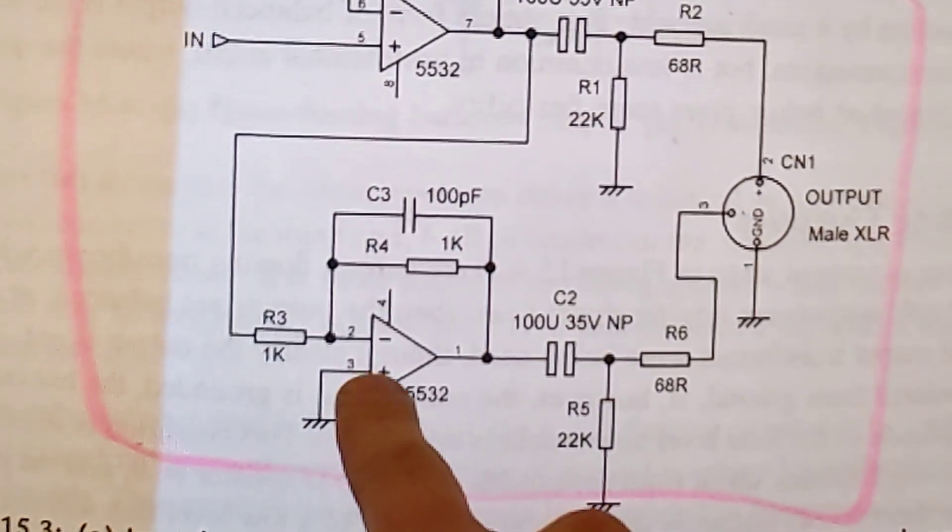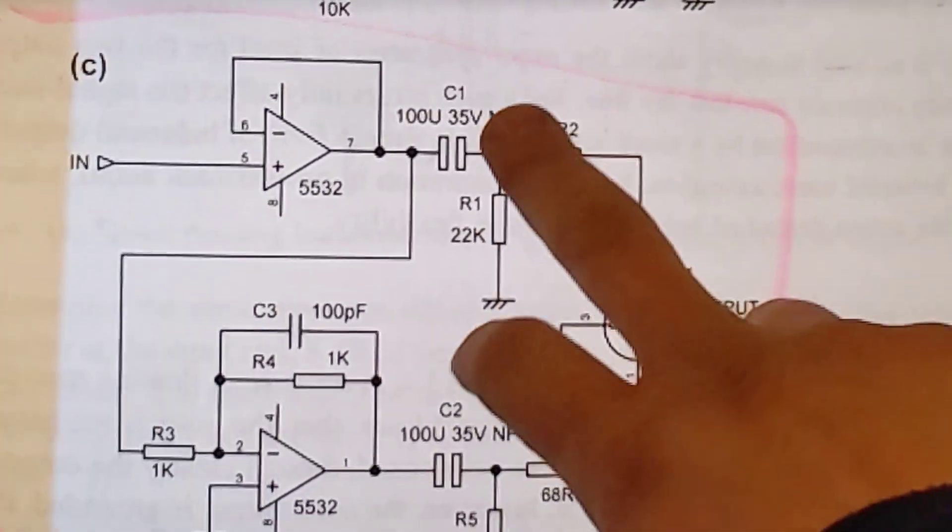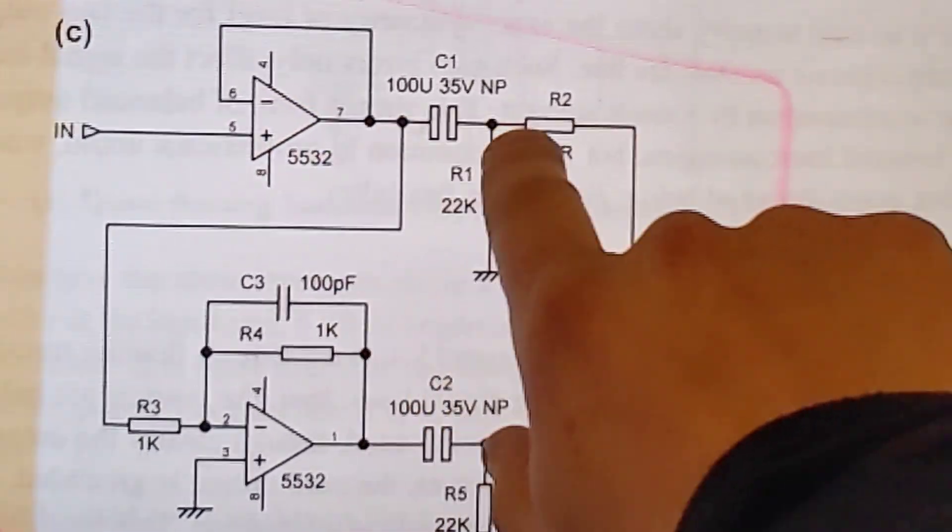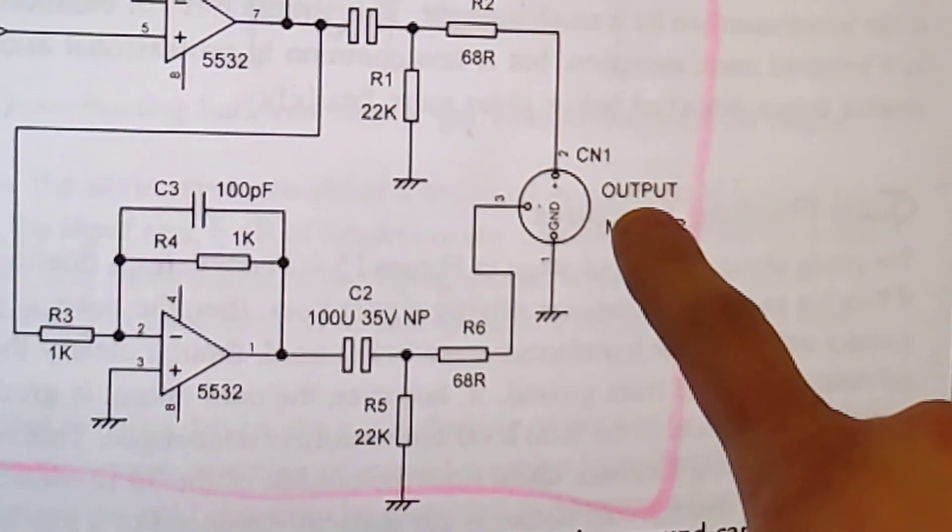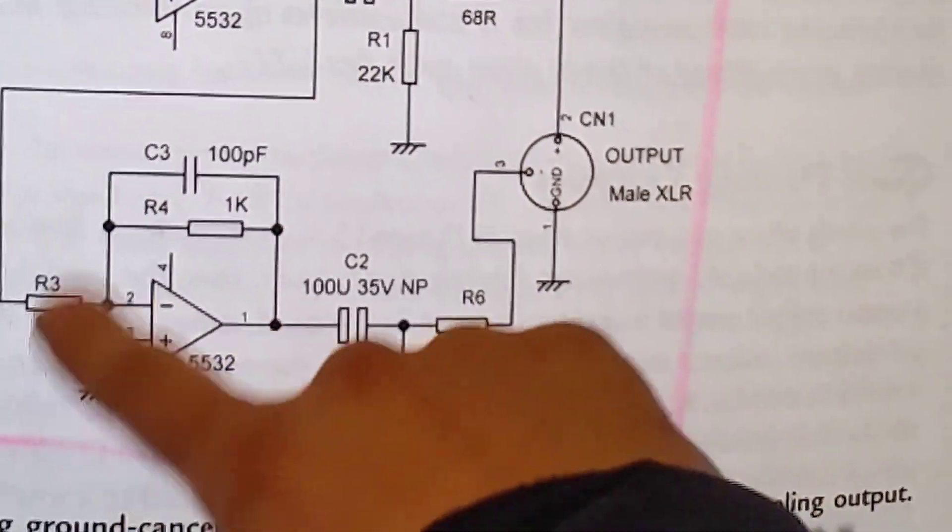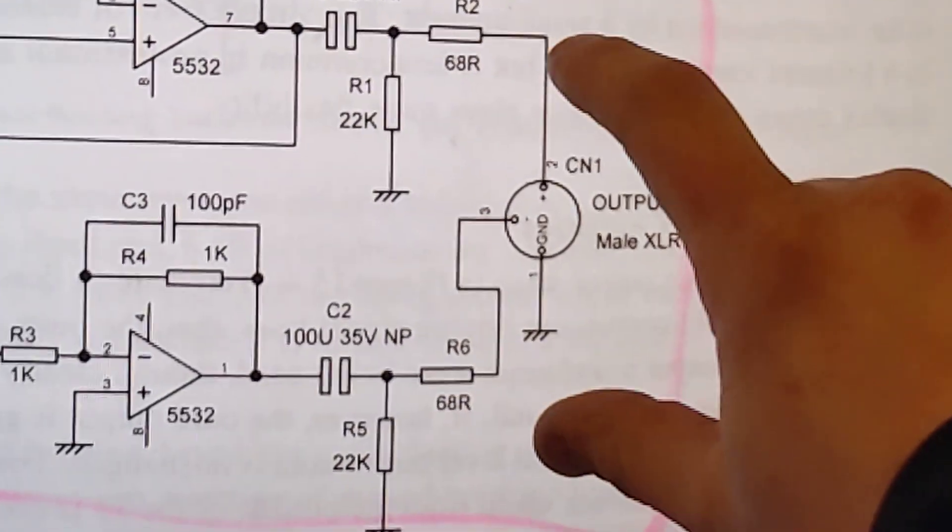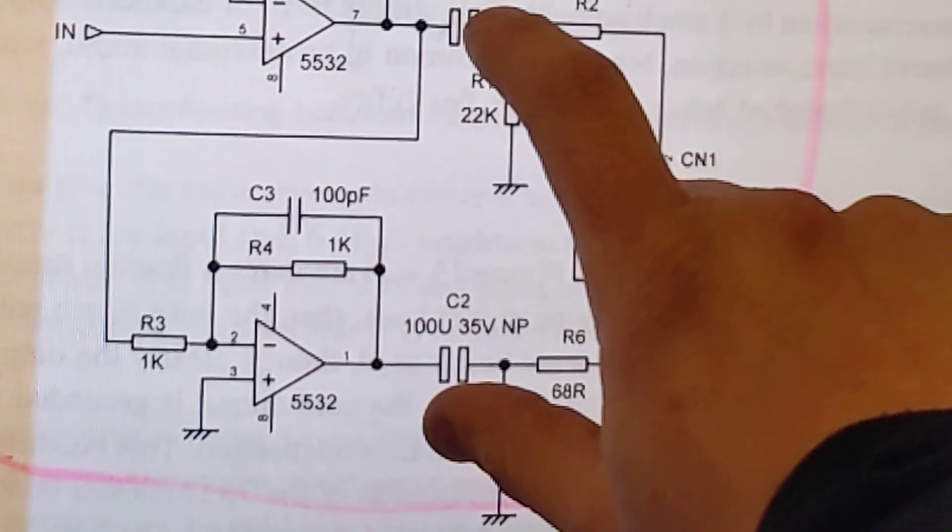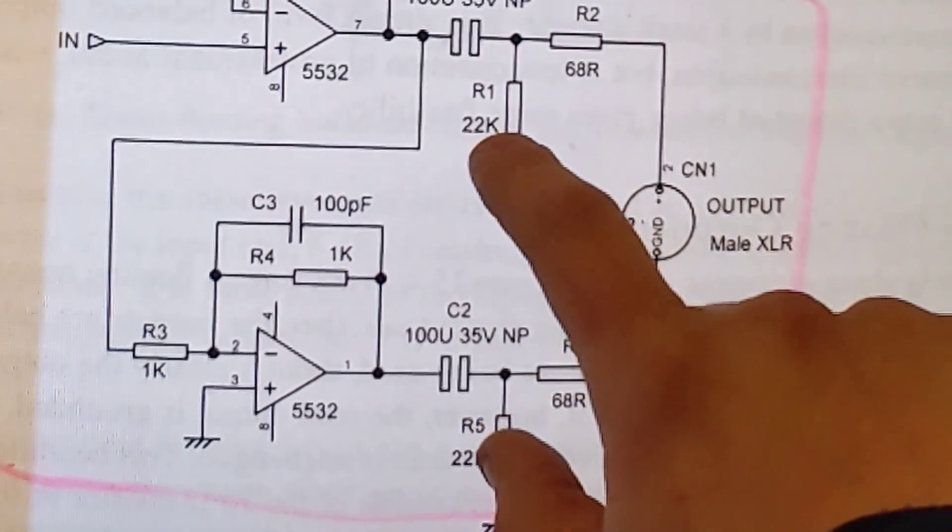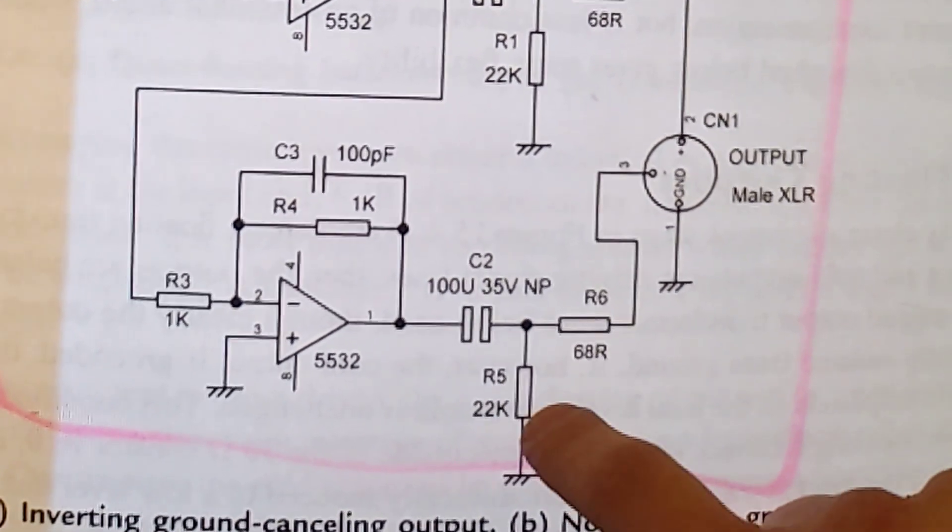Then you have a cap, non-polarized cap. This is DC protection. So DC here, nothing comes out. DC here, nothing comes out. DC comes in here, this protects. This is protected by that same impedance. You know, 70, 70, 140. It's high impedance output relative to ground.